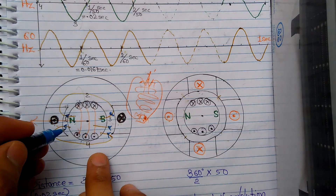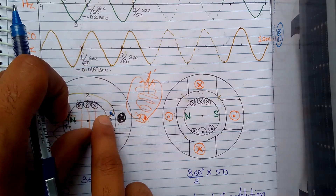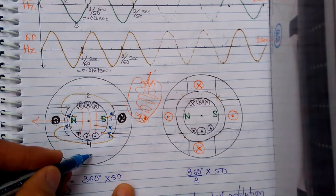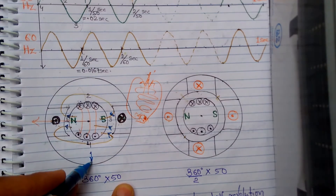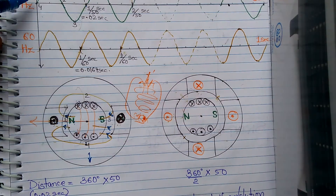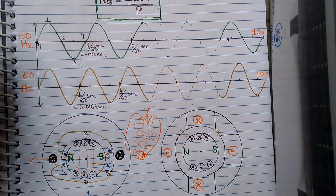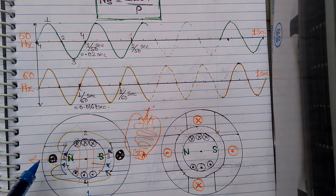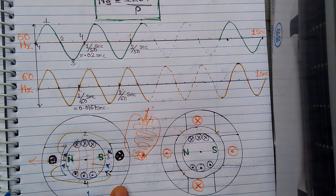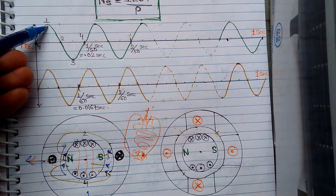Starting from position 4 where N is here — if I imagine this rotor rotated 90 degrees anticlockwise from this position, the direction of maximum flux lines will be downwards. No field lines will be cutting these conductors, so EMF induced will be zero — that corresponds to this point on the graph. If this rotor rotates 90 degrees clockwise to the current position shown, the maximum flux lines will be in this direction, and EMF induced will be maximum — this is position 1.